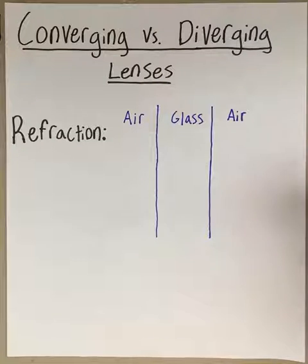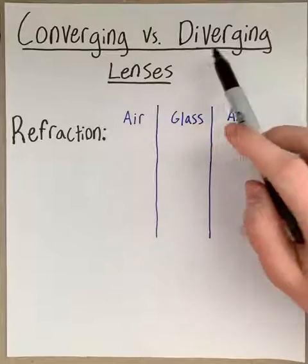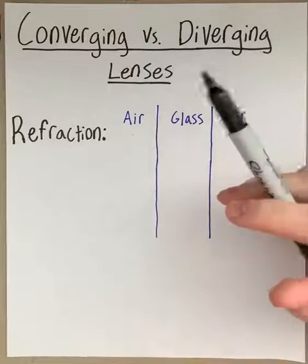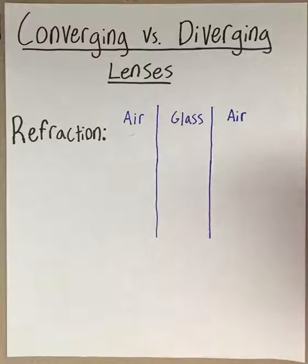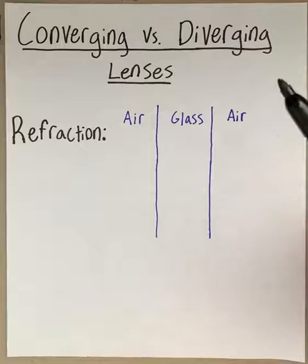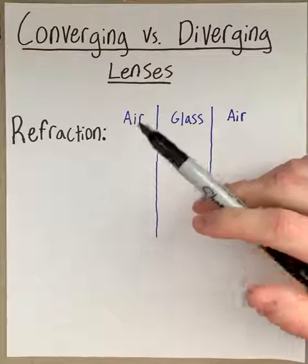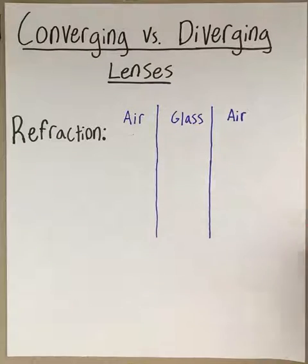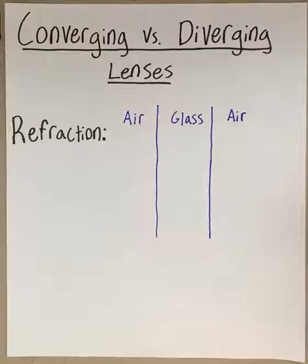Today we're going to be talking about converging versus diverging lenses — comparing the differences between the two. But in order to understand the differences between these two lenses, we have to understand what refraction is. Basically, the important aspect of it is that light travels at different speeds depending on the medium that it's in.